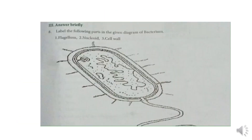Next, label the following parts in the given diagram of bacterium. Three parts are given to label. First one is flagellum. Next is nucleoid — this contains the genetic material. Third one is cell wall. The outermost layer visible is the capsule, and the portion inside that is the cell wall.